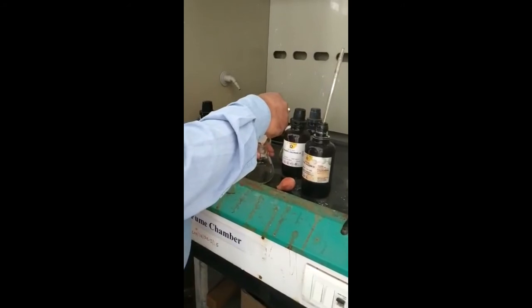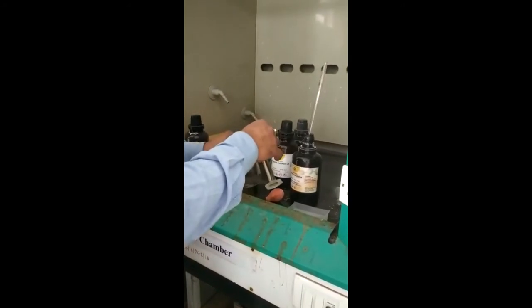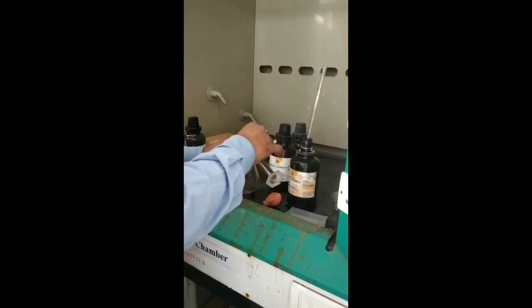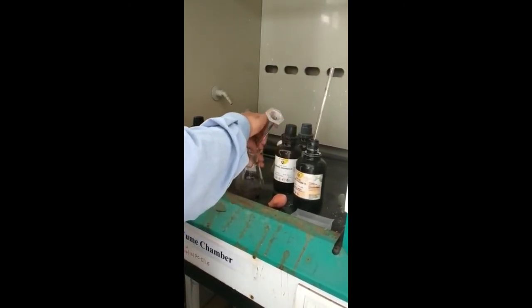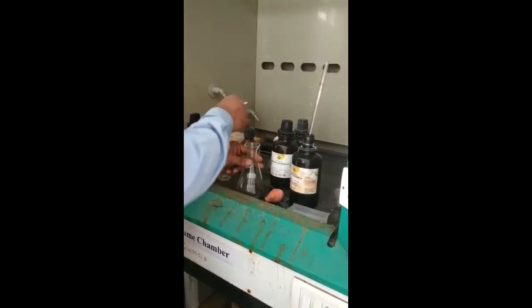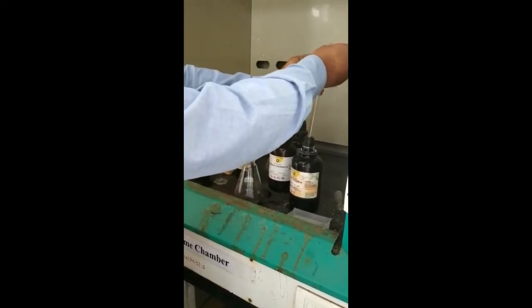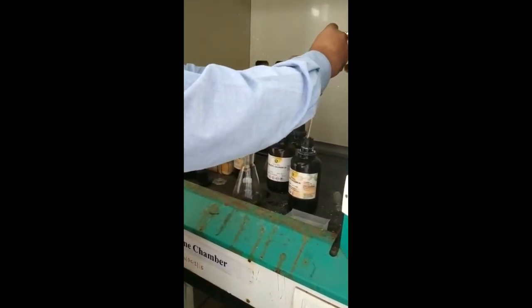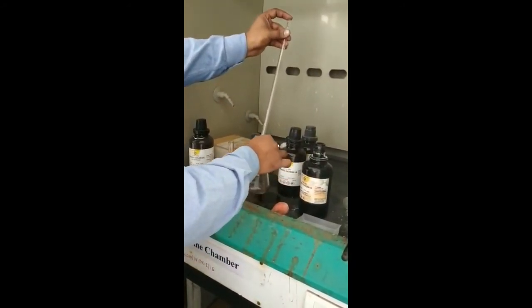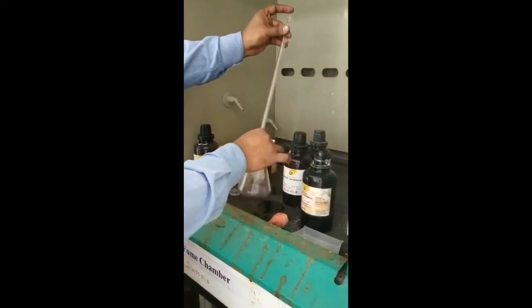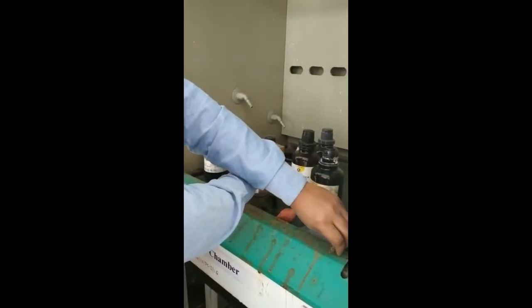Add 0.5 gram of resorcinol as prescribed in the procedure. After taking this resorcinol, we have to add 10 ml of sodium hydroxide solution which is already prepared. And add 1 ml of benzoyl chloride dropwise in fume cupboard. Shake well.